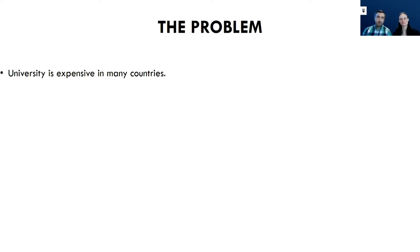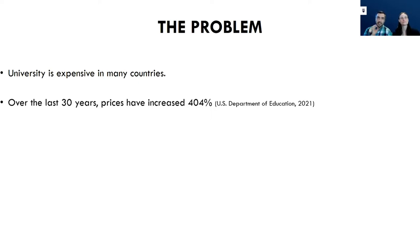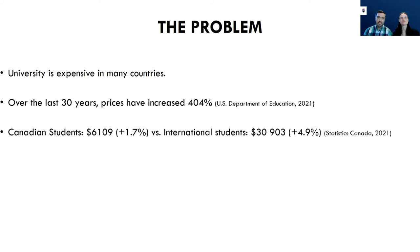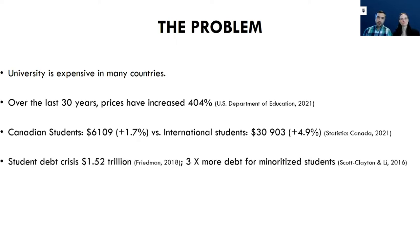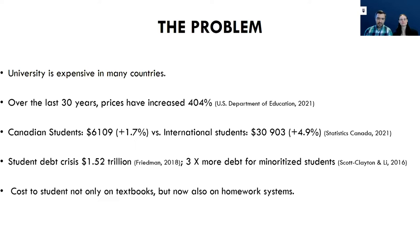The problem for Kaylee and I is that we know that university is expensive. Over the last 30 years, prices have increased over 400% for universities. Domestic students tend to pay less than international students — substantially less — so for international students this burden is often significantly higher. Within the USA there is a student debt crisis of $1.52 trillion, and we know that minoritized students tend to be hit harder with student debt.